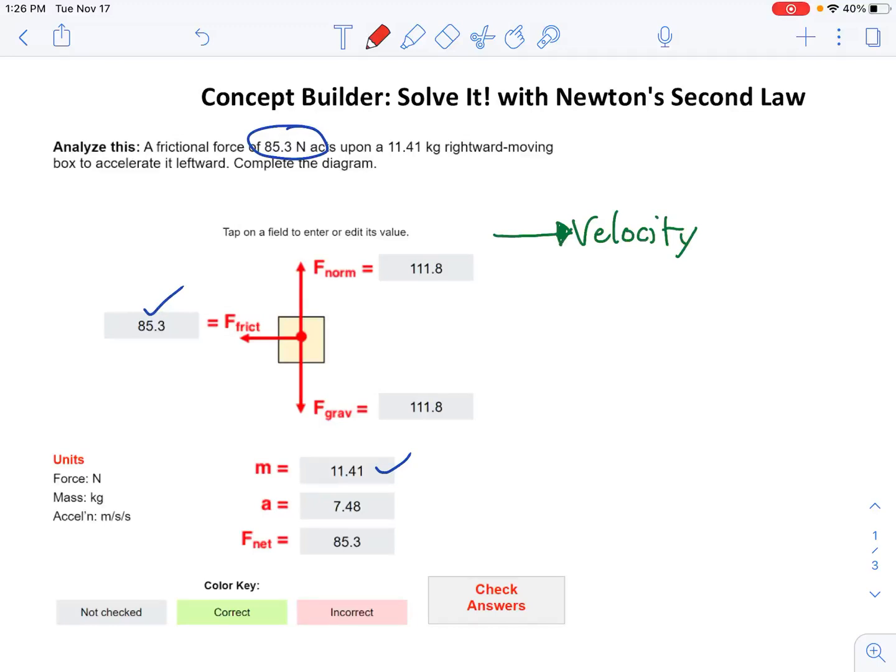We got to fill in everything we know. The first thing you would do is the force of gravity, which is 11.41 times 9.8. The second thing I would have done—you can do this in a variety of ways—is the normal force, which is equal to the same as gravity. You've seen that quite a bit.